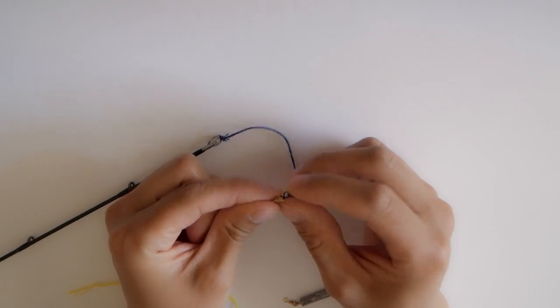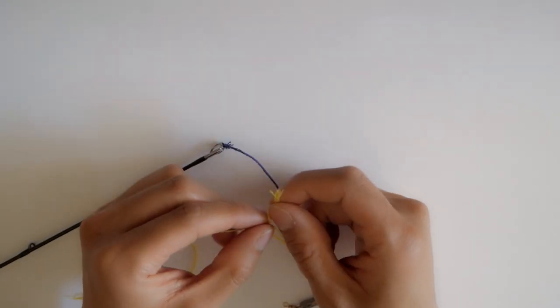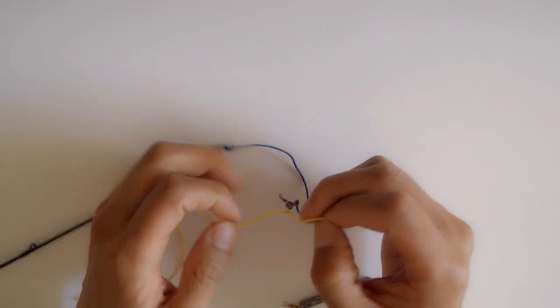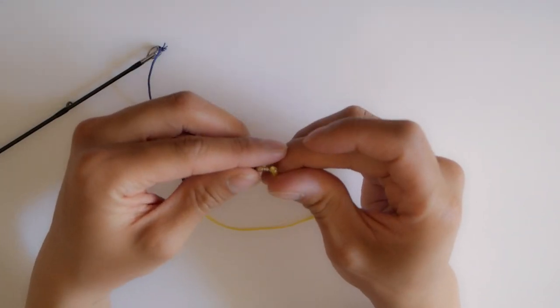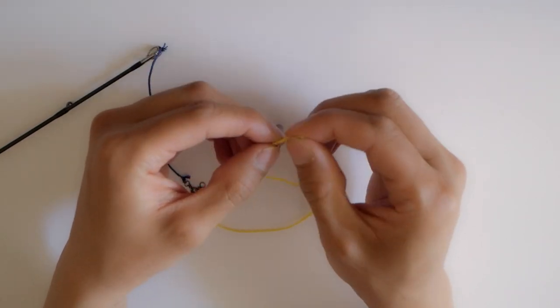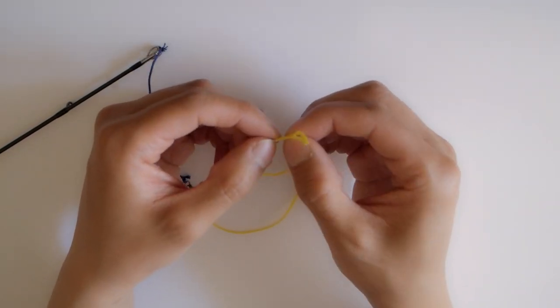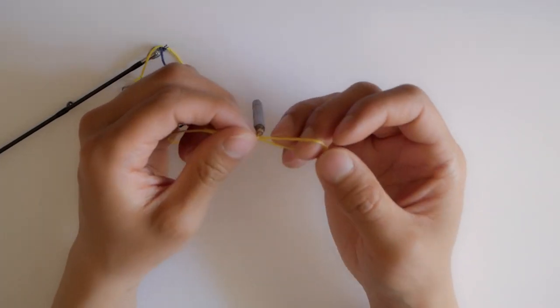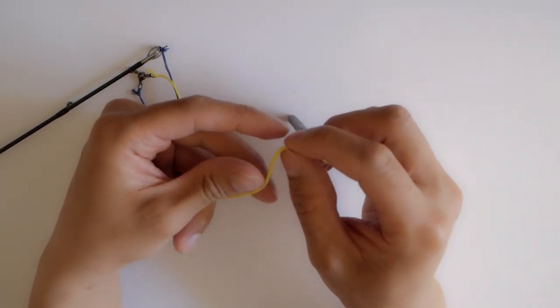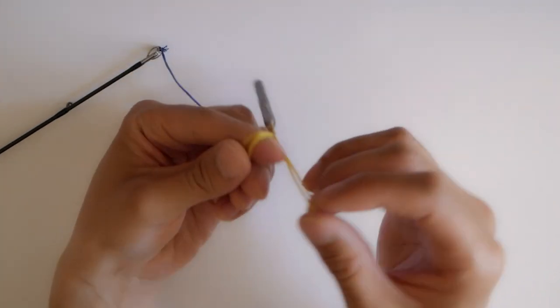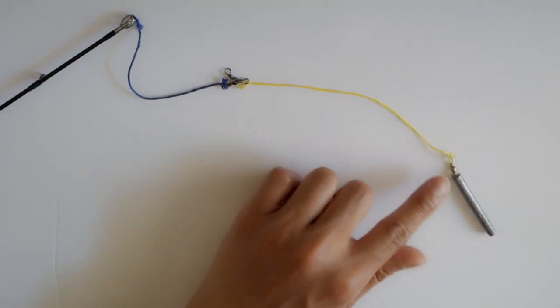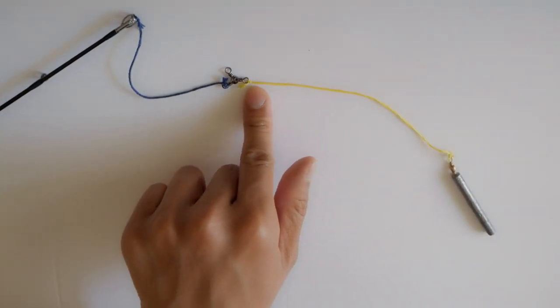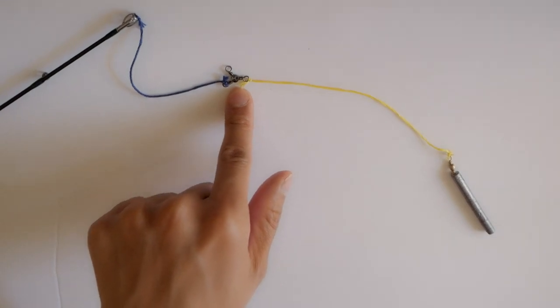Now we're going to tie the weight to the three-way swivel. I'll be using the yellow line so that way you guys can see, but I'll just do a simple improved clinch knot right here. I'll just do a quick one here just to save us some time, snip off the tail. So now we're going to tie the weight onto the monofilament line that's attached to your three-way swivel, and here I'll be using the monofilament. So this is pretty much a basic three-way rig where fishermen use it for catfish, walleye.